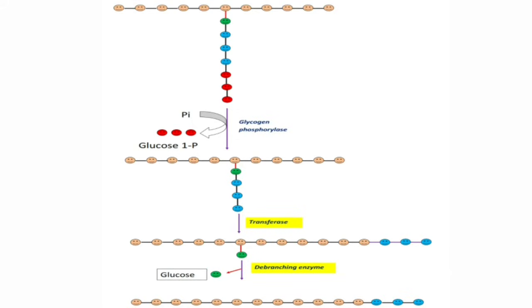After that, one more enzyme comes into action, that is transferase. This transferase transfers 3 glucose units to the other chain. The name itself indicates the function of this enzyme is transferring. After that, we have only one glucose residue at the branch point. That is removed by de-branching enzyme or glucosidase. This de-branching enzyme removes that single glucose unit at branch point as free glucose.